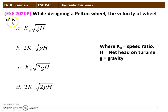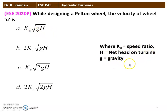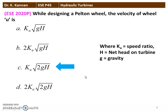The next question from the 2020 question paper: while designing a Pelton wheel, the velocity of the wheel U is given by which formula? The correct answer is option C: U = Ku × √(2gH), where Ku is the speed ratio, H is the net head on the turbine, and g is the acceleration due to gravity.